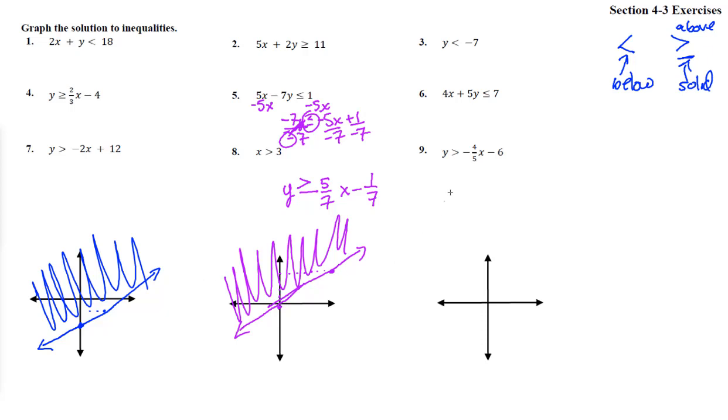Number 6. Subtract 4x from both sides, and we get 5y less than or equal to negative 4x plus 7. Divide by 5, and we get y, let's write it down here, y is less than or equal to negative 4 fifths x plus 7 fifths.